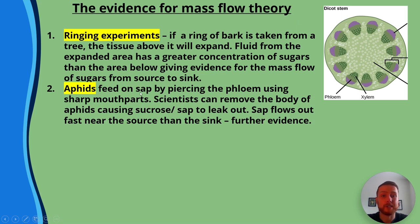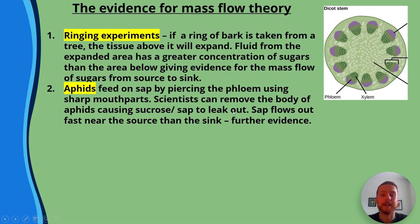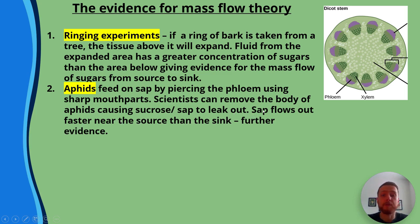Number two: aphids feed on sap by piercing the phloem using sharp mouthparts. Scientists can remove the body of aphids, leaving the mouthpart behind, causing sucrose or sap to leak out. Sap flows out faster near the source than the sink, providing further evidence of the mass flow theory.